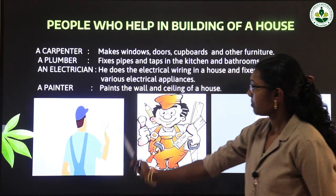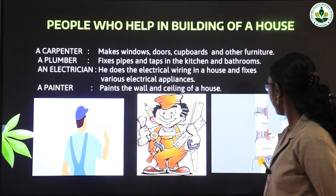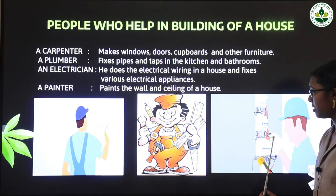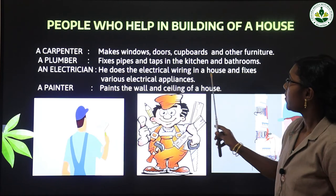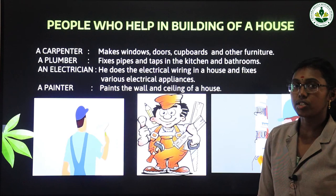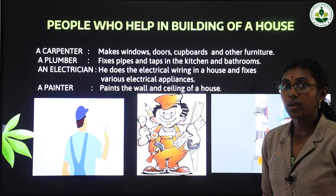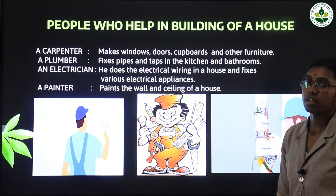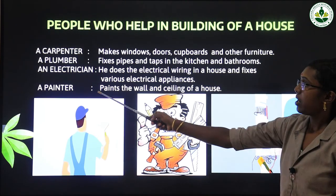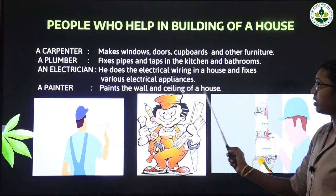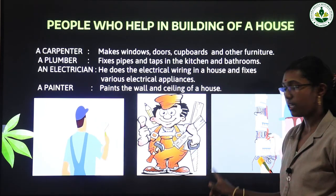An electrician does the electrical wiring in a house and fixes various electrical appliances. An electrician is needed to get lighting in our house. A painter paints the walls and ceiling of a house — painting the total house.